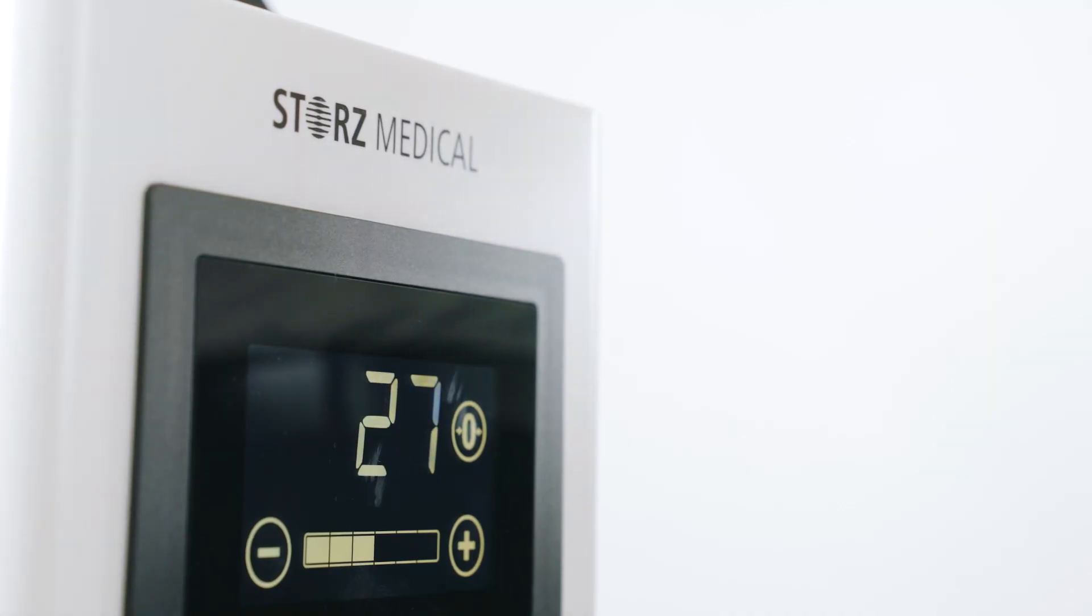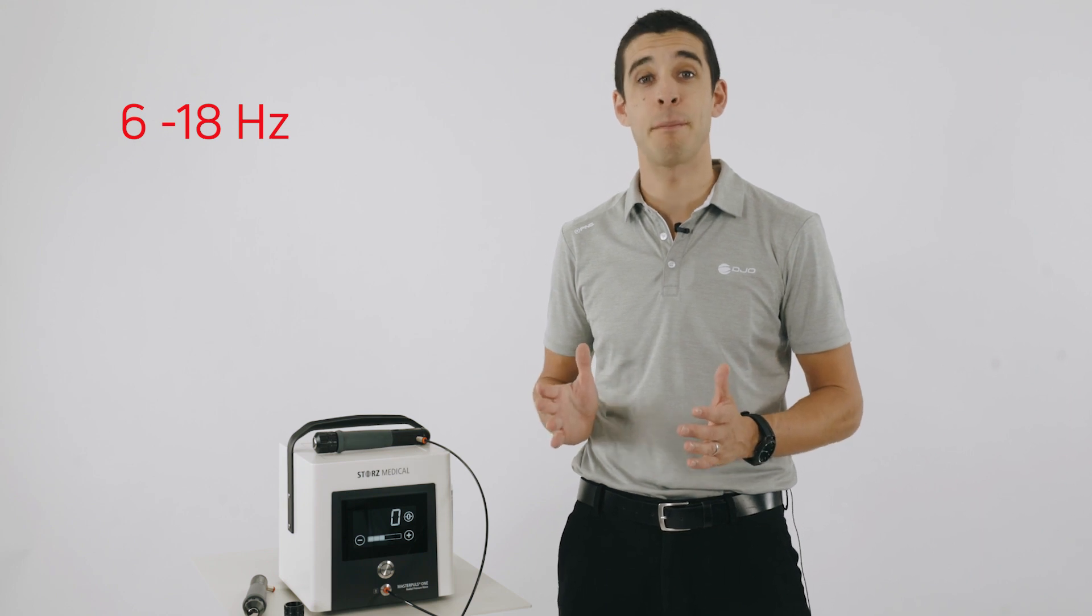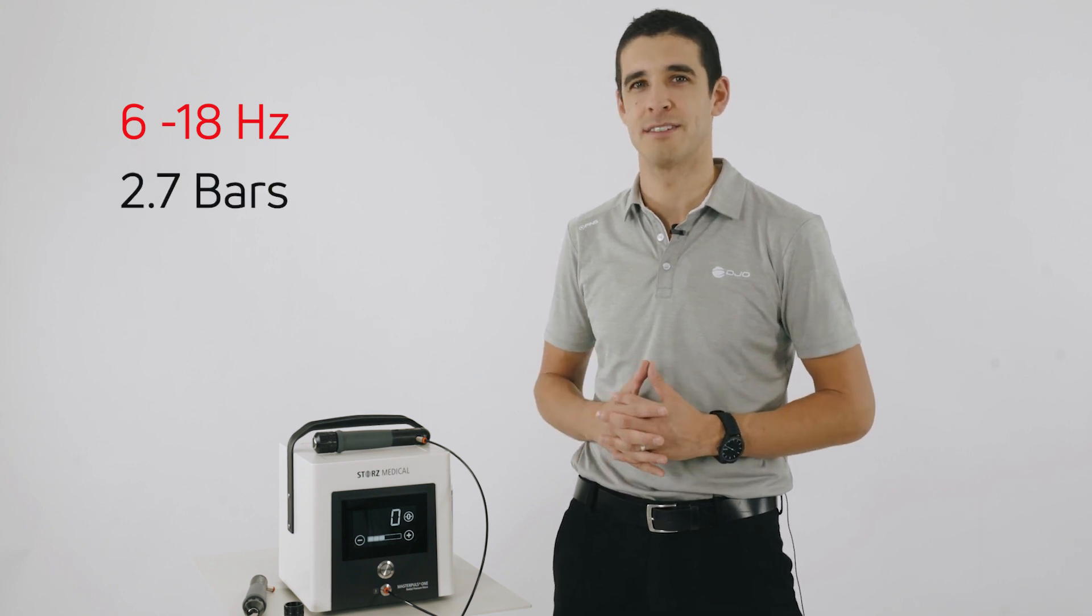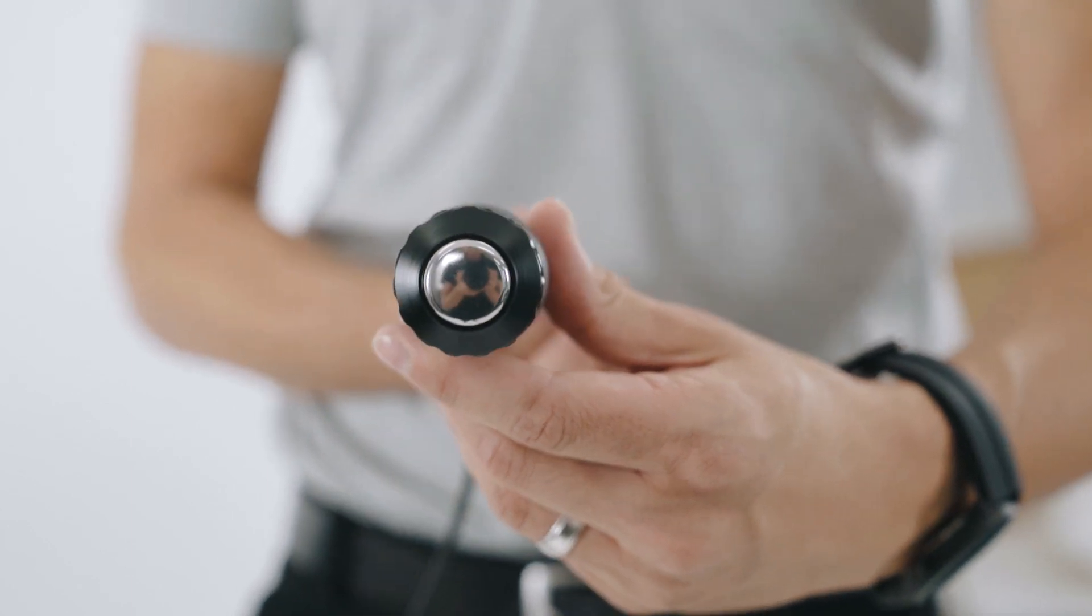The Master Pulse 1 has 6 energy levels ranging from 6 to 18 Hz with a maximum bar pressure of 2.7 bars. The newly developed Radial Sparrow handpiece is unique in the market thanks to its lightweight design and ergonomic shape.